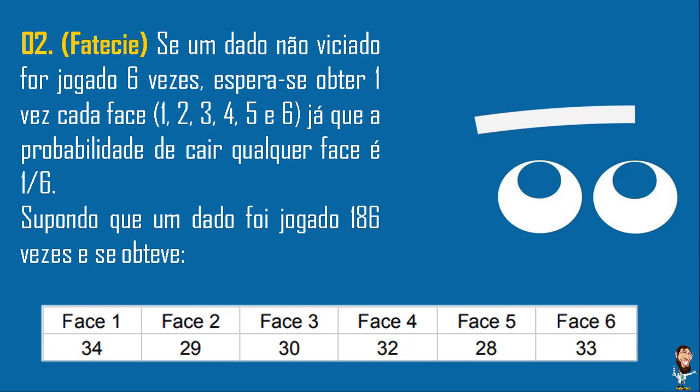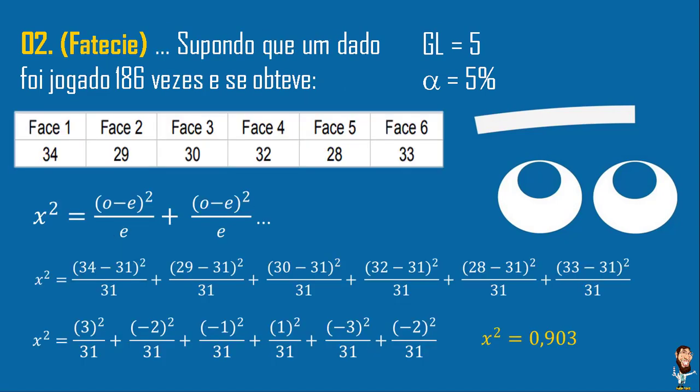Perceba que na tabela está diferente. É confiável isso ou não? Considere o grau de liberdade 5, pois eu tenho 6 faces, 6 opções, 6 classes, menos 1 unidade: grau de liberdade 5. Alfa de 5%. Vamos fazer 6 somas: (34-31)²/31 + (29-31)²/31 + (30-31)²/31 + (32-31)²/31, e assim por diante para as faces 5 e 6. Se você não errar na conta, o Q² calculado é 0,903.